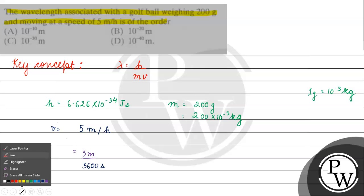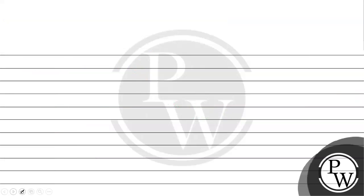Now if we put this value to find out lambda, we have 6.626 into 10 raised to the power minus 34 Joules. Joule can be written as kilogram meter square per second square into seconds, by the mass. Mass is 200 into 10 raised to the power minus 3 kilograms into V. V is 5 meters by 3600 seconds.